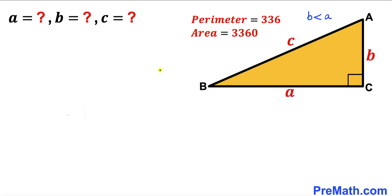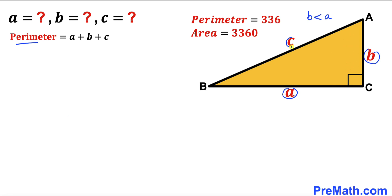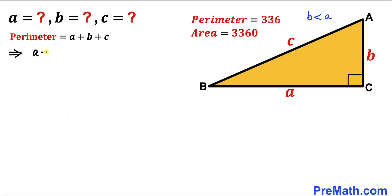Let's get started. We know the perimeter of this right triangle is 336, and the perimeter is simply the sum of the three side lengths of the triangle. Replacing the perimeter by 336, we can write: a plus b plus c equals 336.